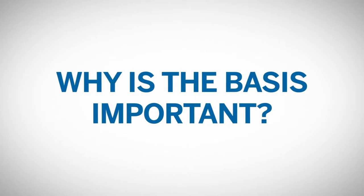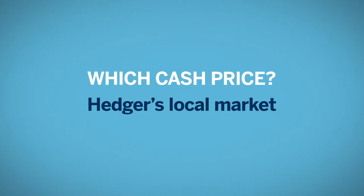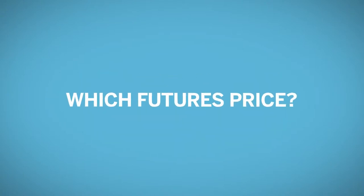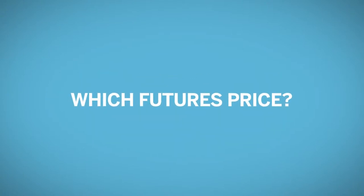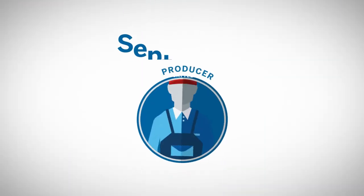One issue in determining the livestock basis is identifying which cash market price should be used in the calculation. There are numerous livestock cash markets around the world, but a hedger only needs to be concerned with the local market that he regularly buys from or sells to. The futures price used to calculate the basis should be the futures price of the contract month that is closest to, but not before, the time period in which he plans to buy or sell the physical livestock product.